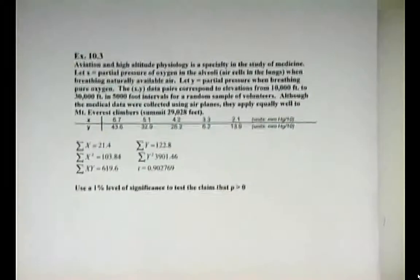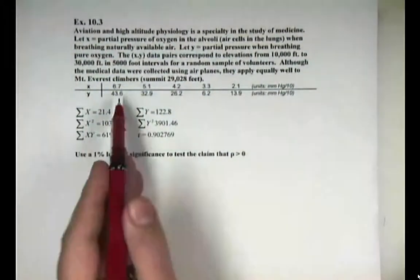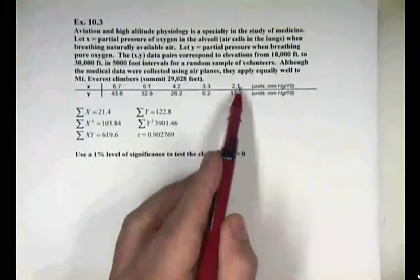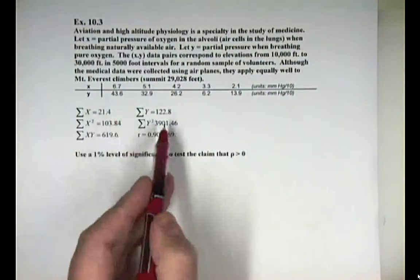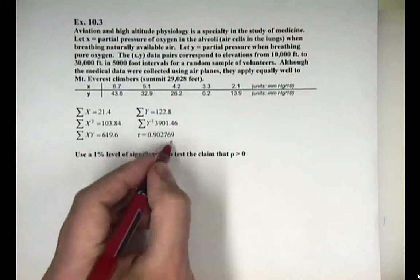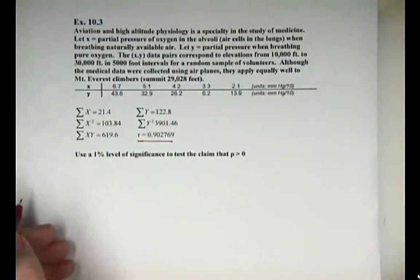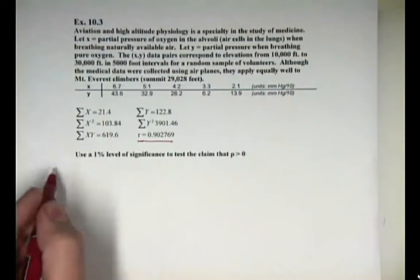So our example is 10.3. And basically we have some data. Now you would enter this into your calculator into list one and then the y's into list two to get these sample statistics that I've already calculated. Notice that the correlation coefficient is already calculated for us. And we want to test the claim that rho is greater than zero. And we want to use an alpha level or a level of significance of 1%. So step one is to set up your hypothesis.